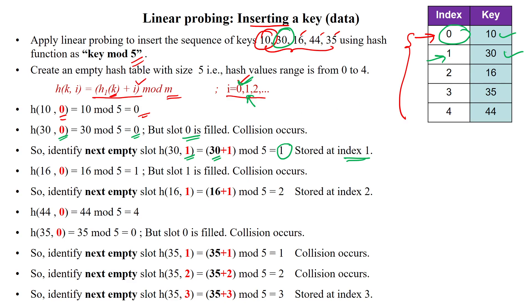The next value is 16. Starting with probe sequence 0, we apply 16 mod 5, which gives 1. But index 1 already has 30 stored, so a collision occurs. We move to probe sequence 1, calculating 16 + 1 mod 5, which gives index 2. Index 2 is free, so we store 16 at index 2.